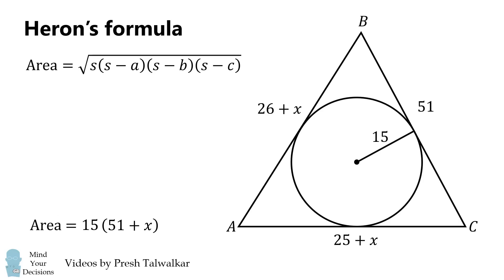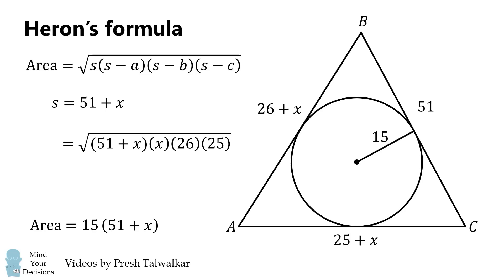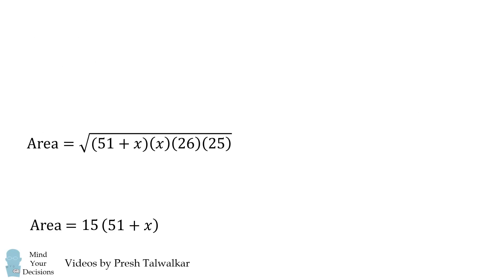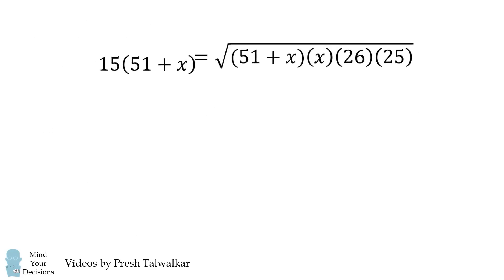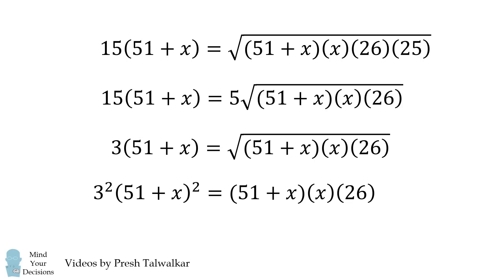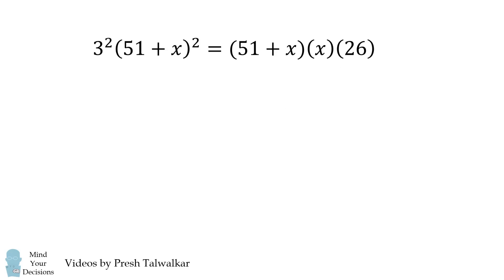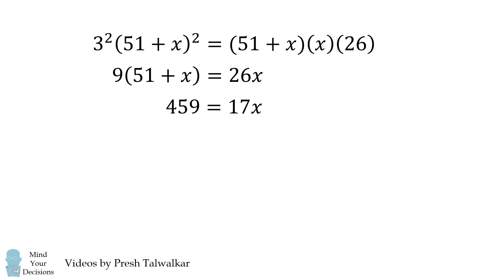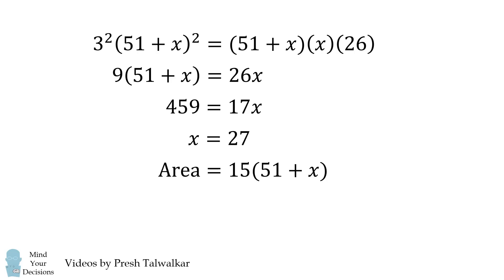We then apply Heron's formula, substituting the semi-perimeter and side lengths to get a second expression for the area. Setting the two area equations equal to each other and solving algebraically, we find X equals 27. Substituting back into the in-radius area formula gives the area of triangle ABC equal to 1170.